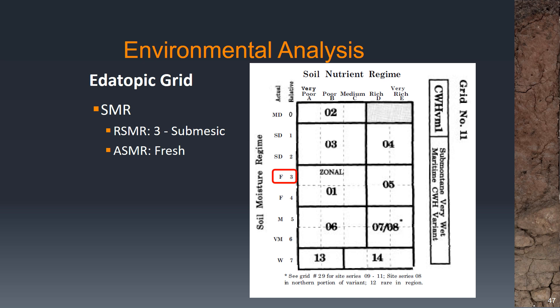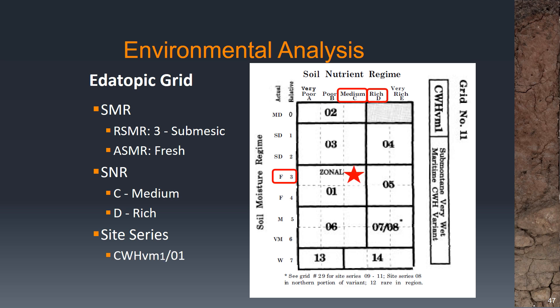Keep in mind that these relationships vary between biogeoclimatic units — a relative SMR of 3 isn't always going to be fresh, for example. You need to look it up on the edatopic grid for the biogeoclimatic unit you're considering. For our soil nutrient regime we were undecided between C medium and D rich, giving us two site series possibilities: CWHVM1/01 for a site association of 01, or a site association of 05. Perhaps the subsequent analysis will help us decide between the two.